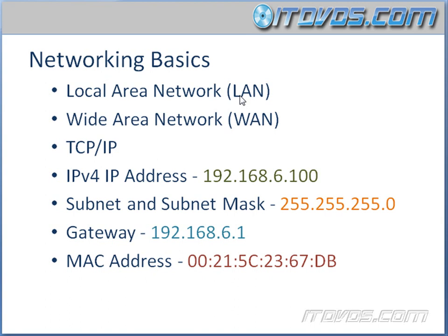But what if you have two offices — say one in San Diego and one in Phoenix — and those two offices need to communicate? You'd have to connect them through a wide area network, also called a WAN. WANs are normally a bit slower than local area networks.